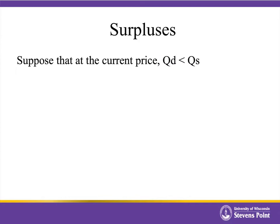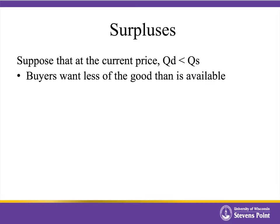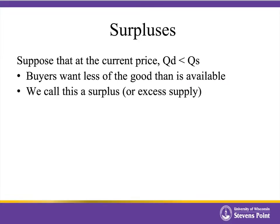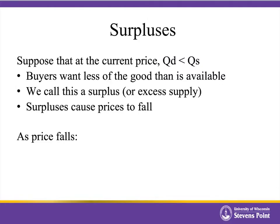The opposite situation is when we have a surplus. Suppose that we have a price where the quantity demanded is less than the quantity supplied. That simply means that buyers are not willing to buy as much of the good as what is actually available. We call this a surplus, or some textbooks refer to it as excess supply. If we have a surplus, sellers have items on the shelves that nobody's willing to buy, and so they start marking the price down.